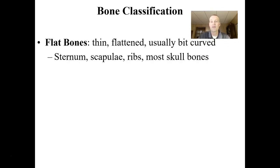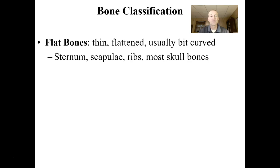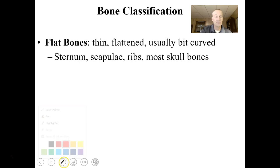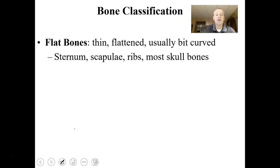Bones can be classified in many different kinds of ways. They can be classified based on their shape and size. We do have bones that are considered flat bones in the human body — these are going to be flattened, can be a little bit curved, and they include bones such as your sternum, the scapulae which are your shoulder blades, ribs, and most of the bones of the skull.